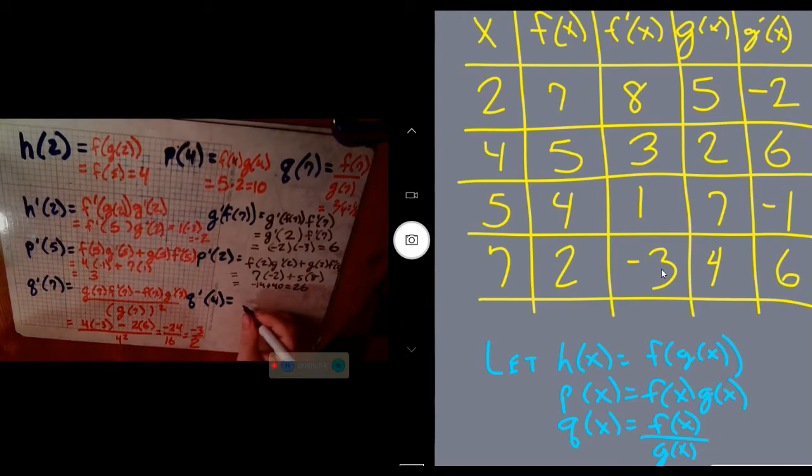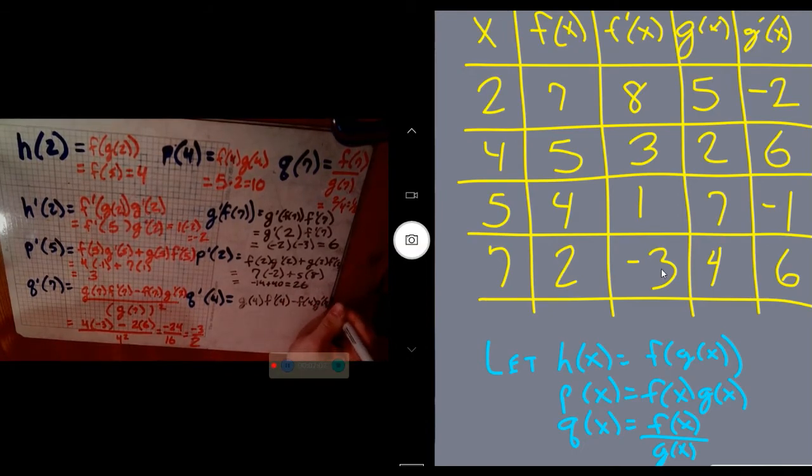For this quotient rule one, start from the bottom. Low, the function on the bottom, is g. So low times d high minus high times d low all over low squared. Make sure you're paying attention to what your high and low functions are. Then we can just read it straight off. g(4) in my table becomes 2. f'(4) in that same row is 3.